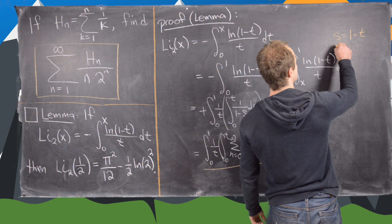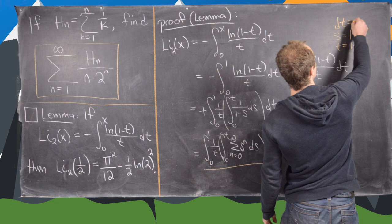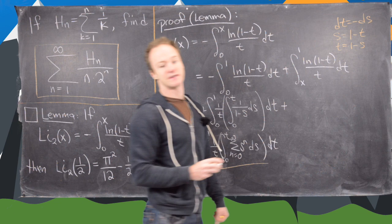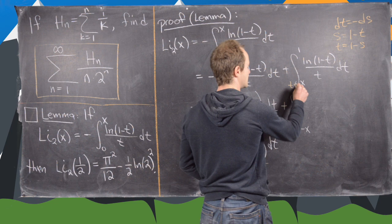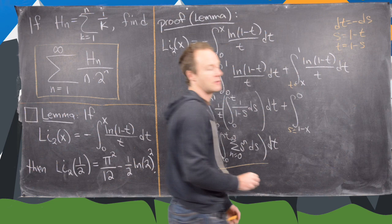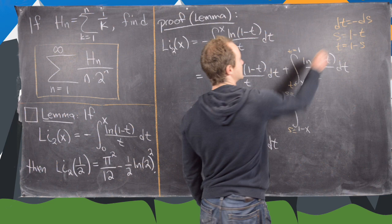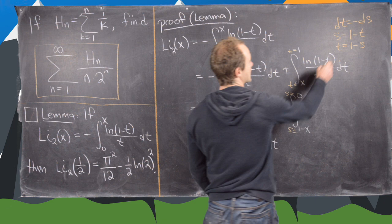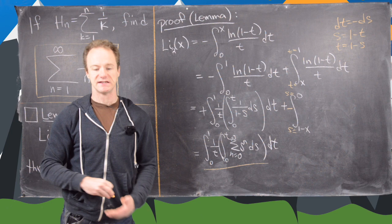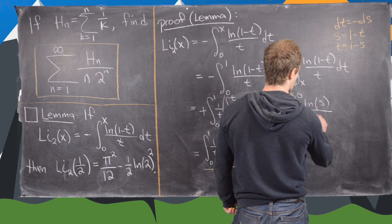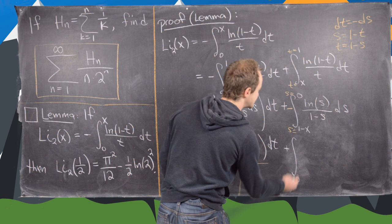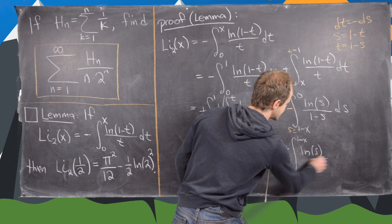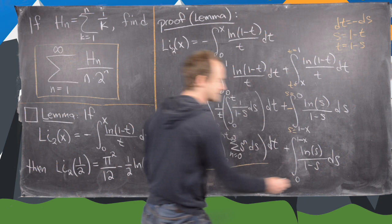For the second integral we do a substitution: let s = 1 minus t, so t = 1 minus s and dt = minus ds. When t = x, s = 1 minus x, and when t = 1, s = 0. The minus sign from dt flips the bounds, giving plus the integral from 0 to 1 minus x of ln(s) over (1 minus s) ds.